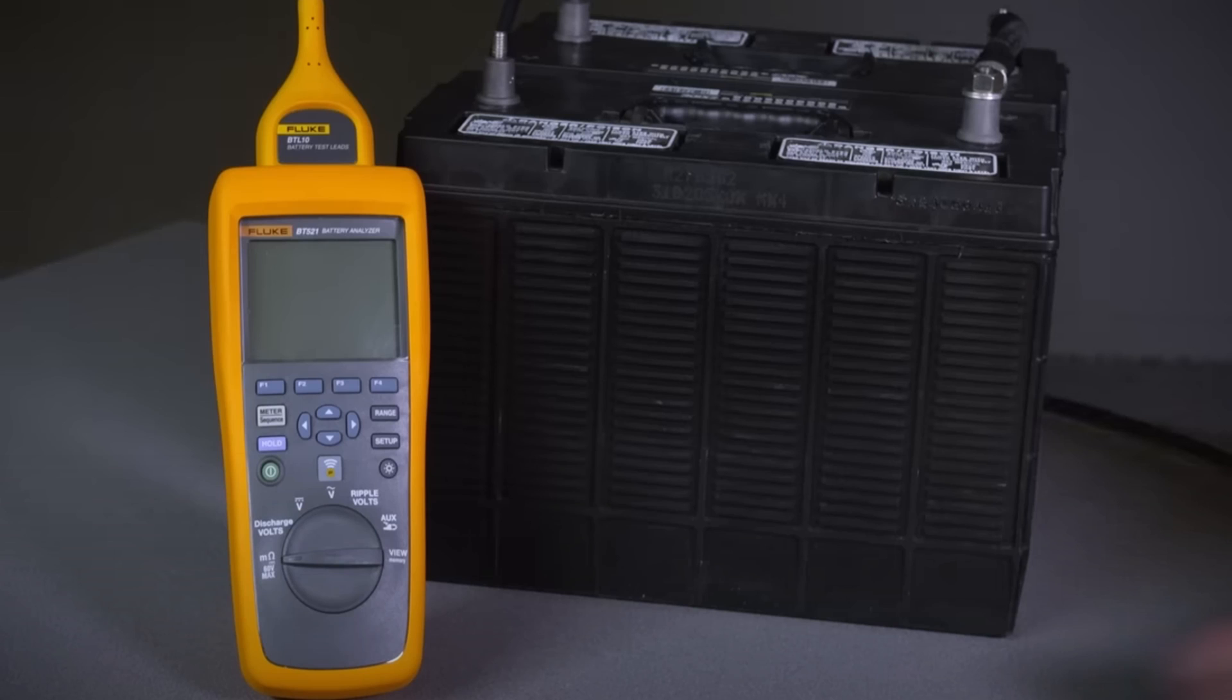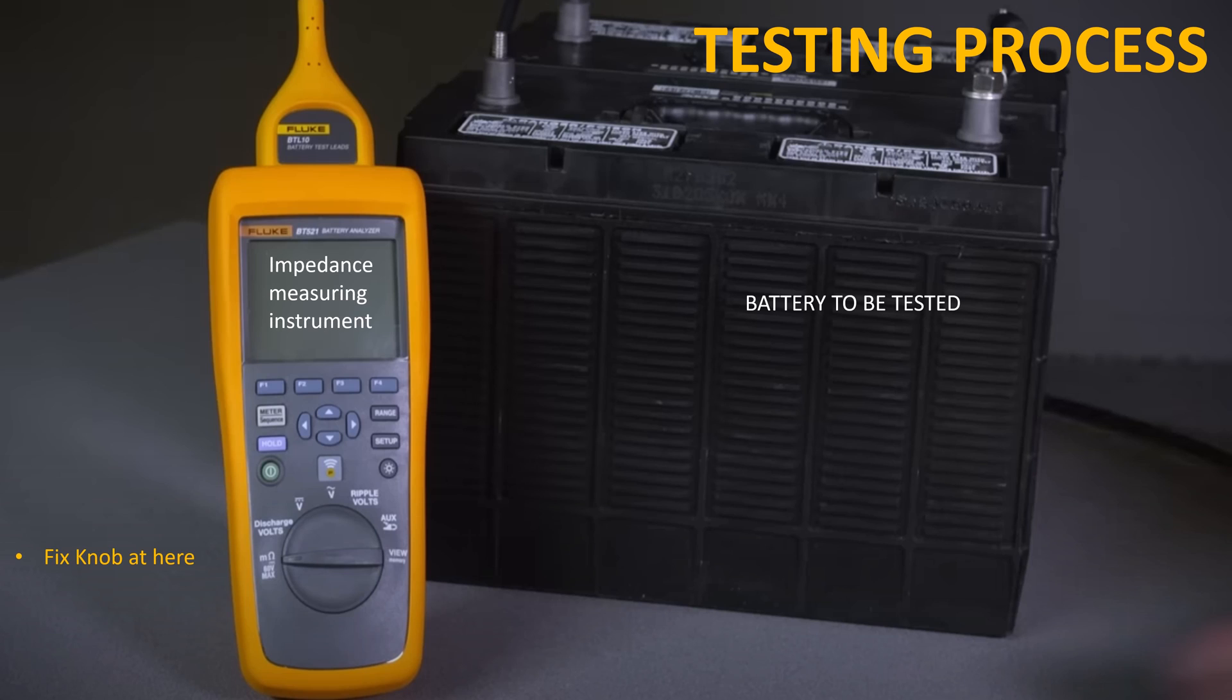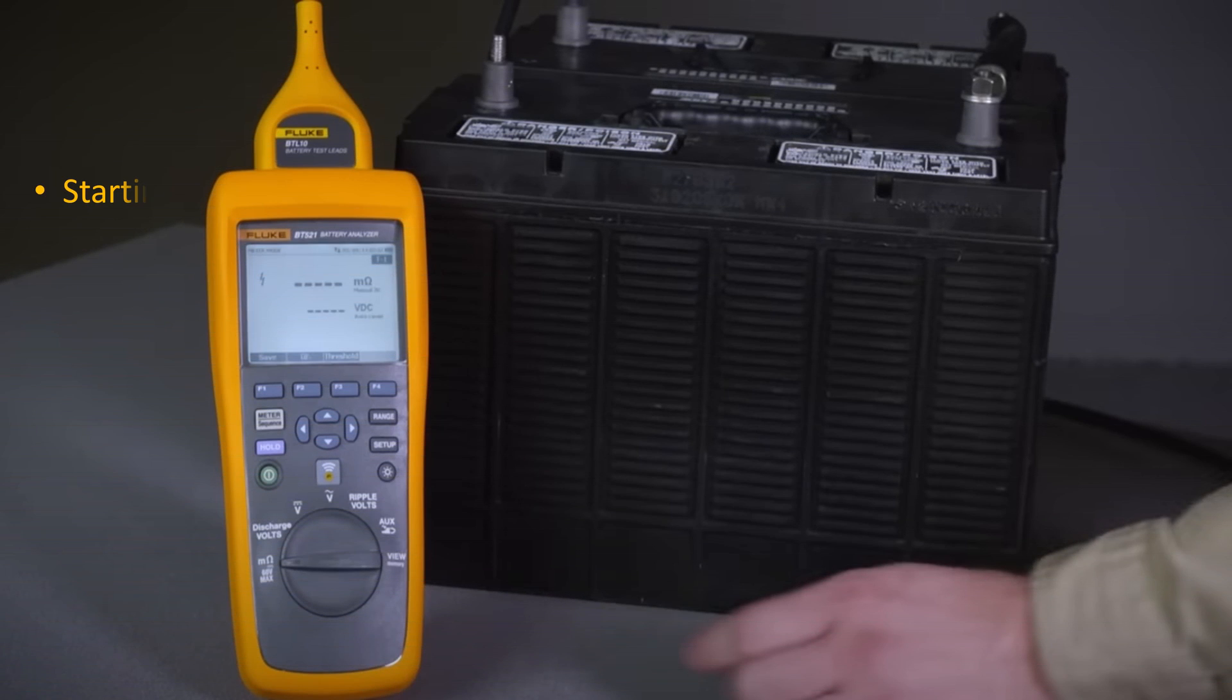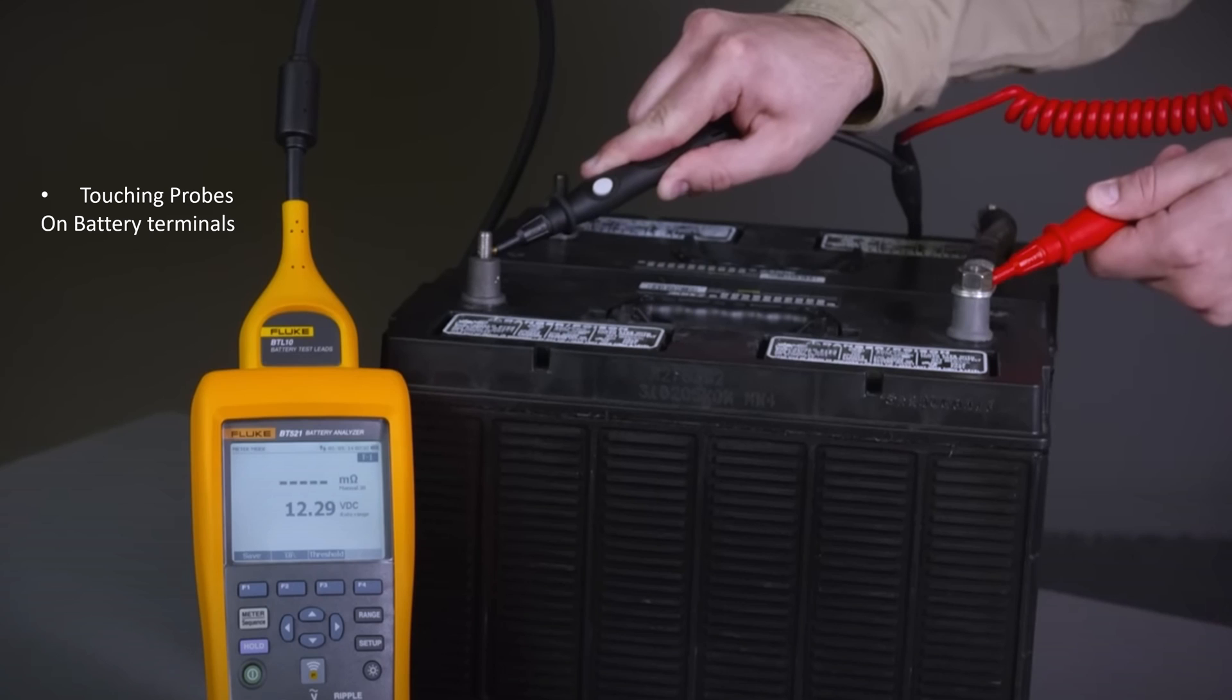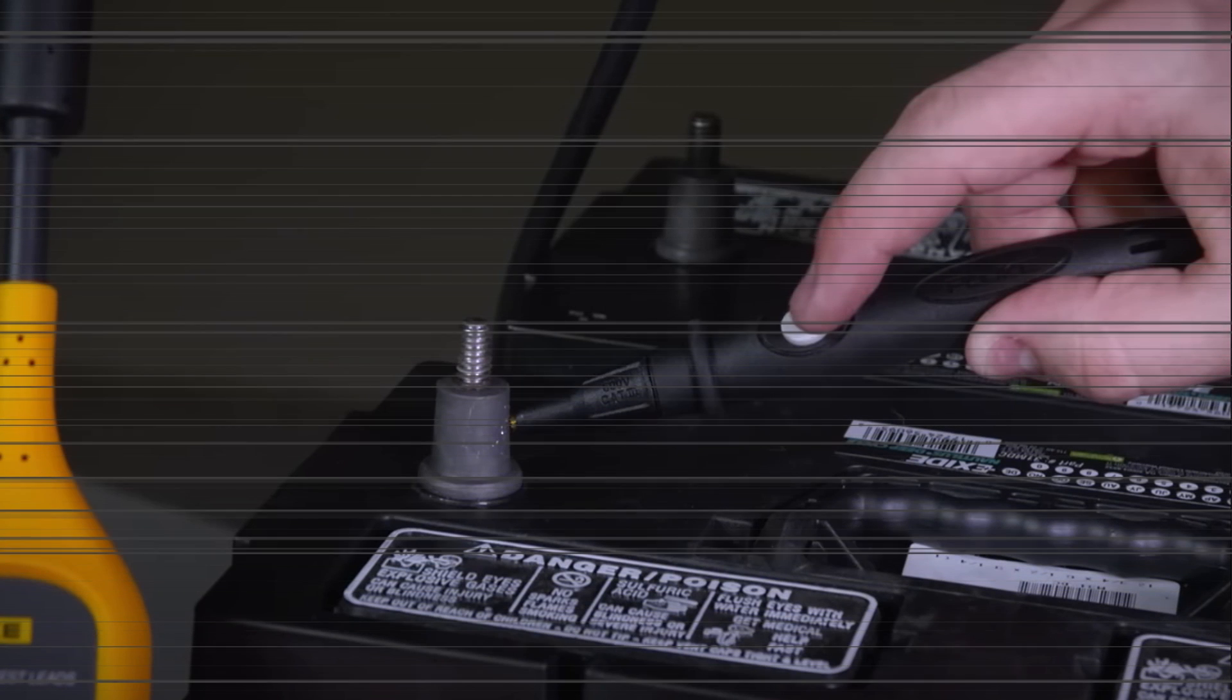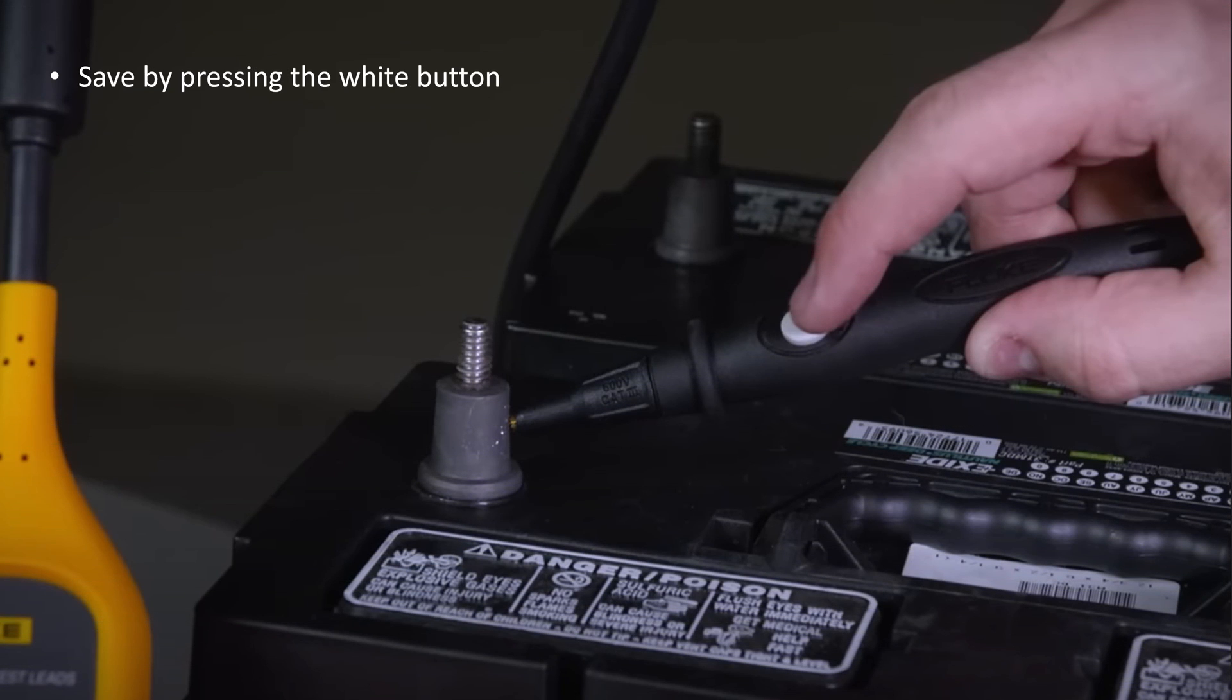Please watch the impedance wizarding process by Fluke make impedance tester. Covering feature, fix knob at here. Powering on, turning. Touch probe on battery terminals. Result depicted. Save by pressing white button.